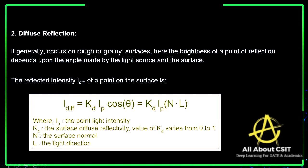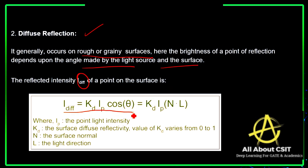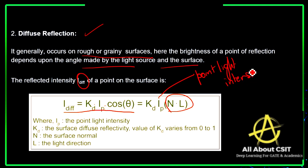The next model is diffuse reflection. Diffuse reflection generally occurs on rough or grainy surfaces. The brightness of a point of reflection depends upon the angle made by the light source and the surface. The reflected intensity I_diffuse is calculated as: I_diffuse = kd × ip × cos(θ), or equivalently kd × ip × (N · L), where ip is the point light intensity, kd is the surface diffuse reflective coefficient varying from 0 to 1, N is the surface normal, and L is the light direction.